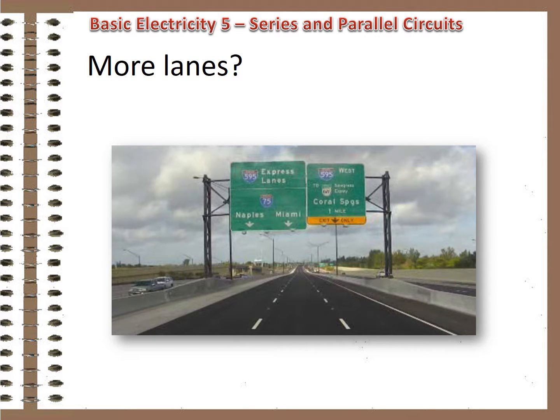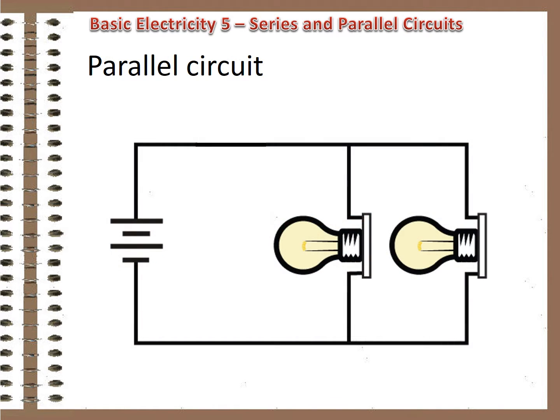Getting back to that commuting nightmare we were involved with earlier, would things improve if more lanes were available? Of course. The resistance to passage would decrease. It would be easier to get through. We can add lanes to our electrical circuit too. Such a circuit is called parallel, because now the components run in separate paths next to each other instead of in a line. Let's see how that affects things.